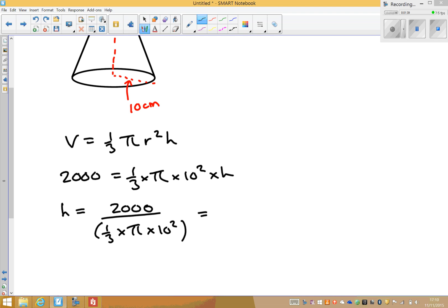And I'll type it in exactly like that on my calculator. So it's 2,000 divided by, I open the bracket, and I'm going to use a third multiplied by pi multiplied by 10 squared. And I get an answer there of 19.0985 and so on.